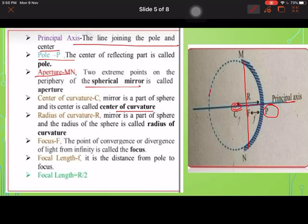That is known as center of curvature. Radius of curvature: mirror is a part of the sphere, and radius of the sphere is called radius of curvature. So this radius of curvature and center of curvature is generally same.